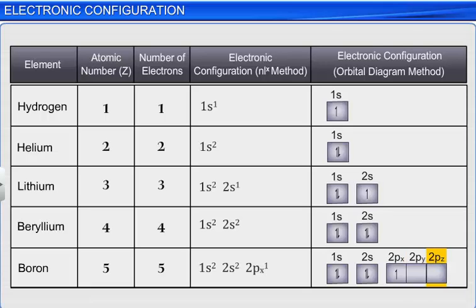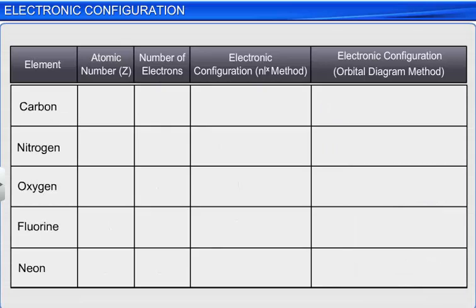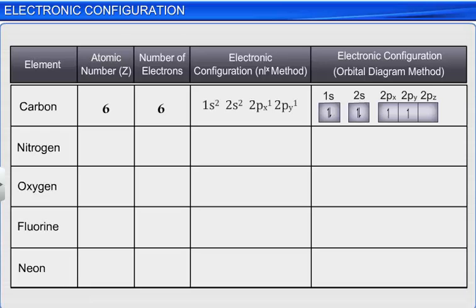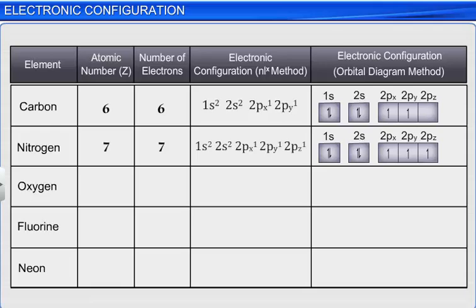Carbon has six electrons. The first four electrons fill the 1s and 2s orbitals. The remaining two electrons will go to any two of the three 2p orbitals in accordance with Hund's rule, and these will have parallel spins. Nitrogen has seven electrons. The first four electrons fill the 1s and 2s orbitals. The remaining three electrons will go to the three 2p orbitals in accordance with Hund's rule, and these will have parallel spins.